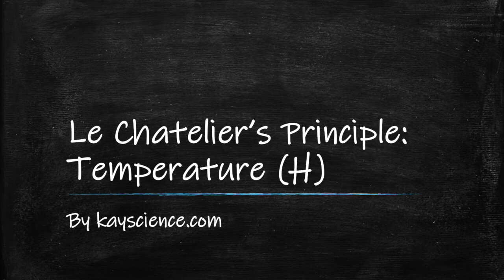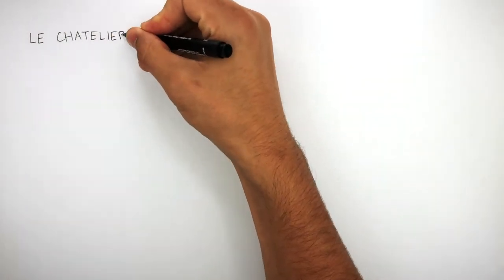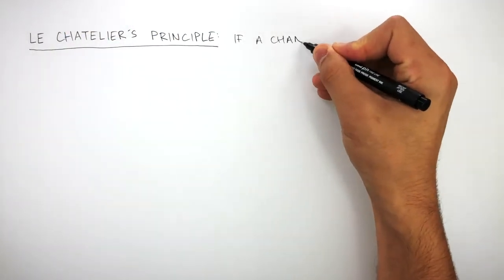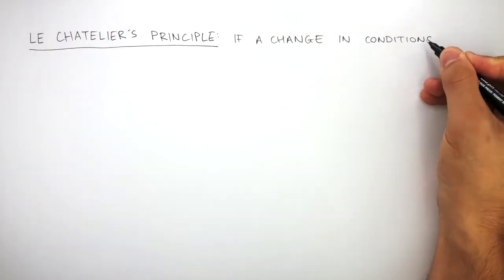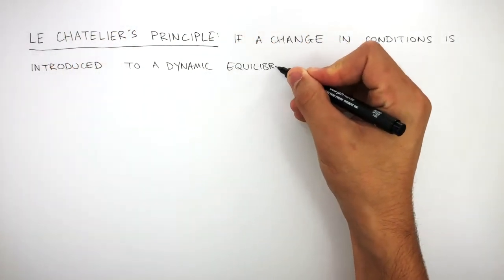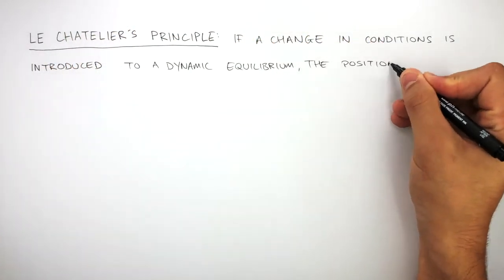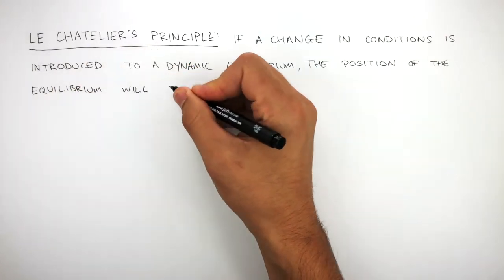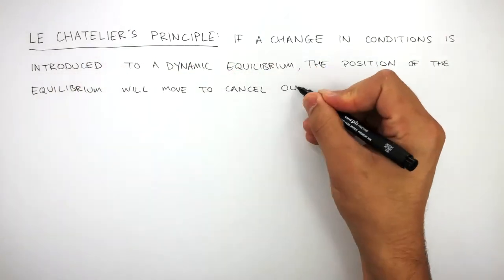Le Chatelier's Principle by kscience.com. Le Chatelier's Principle states that if a change in conditions is introduced to a dynamic equilibrium, the position of the equilibrium will move to cancel out the change.